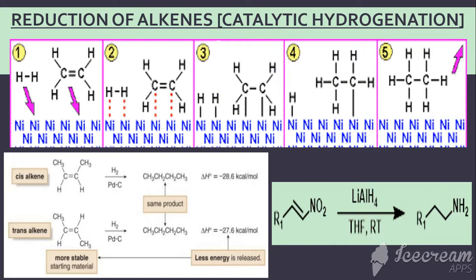In step four, the nickel-hydrogen bond and nickel-carbon bond, which were formed in step three through chemisorption, break and carbon-hydrogen bonds are formed, repeating to form the ethane molecule. In the fifth and final step, the ethane molecule is temporarily held by intermolecular forces but readily breaks free from the catalyst surface. This is how ethene gets converted into ethane in the presence of hydrogen and nickel catalyst.